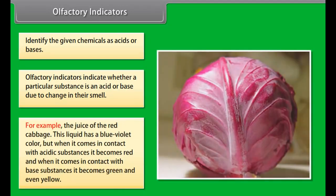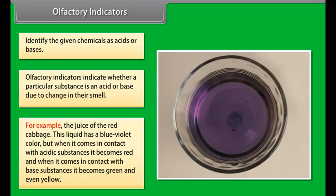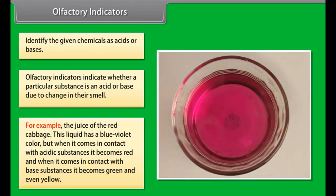For example, the juice of the red cabbage. This liquid has a blue-violet color, but when it comes in contact with acidic substances, it becomes red, and when it comes in contact with base substances, it becomes green and even yellow.